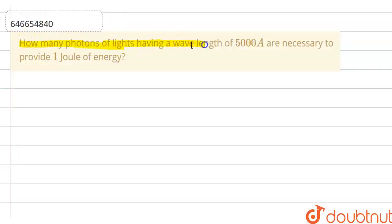Hello everyone, let us start the question. How many photons of light having a wavelength of 5000 Angstrom are necessary to provide 1 joule of energy?